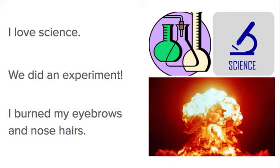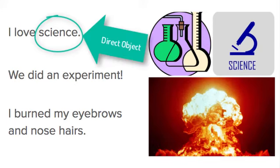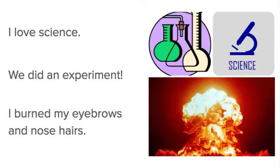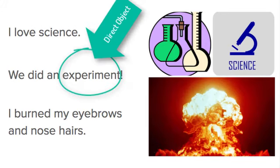Alright, let's practice with a few more sentences. I love science. I love what? Science. Science is the direct object. We did an experiment. We did what? Experiment. Experiment is the direct object.